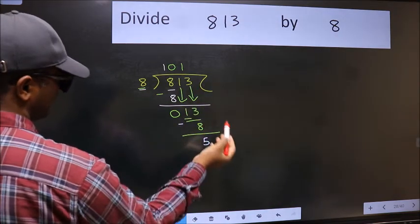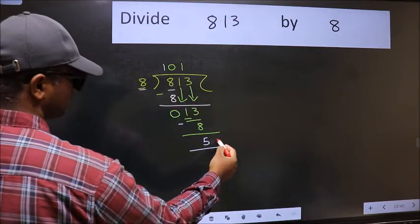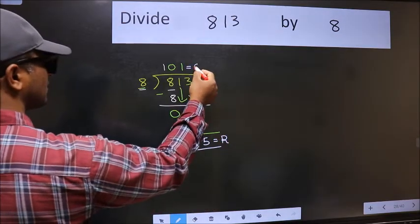No more numbers to bring it down, so we stop here. This is our remainder and this is our quotient.